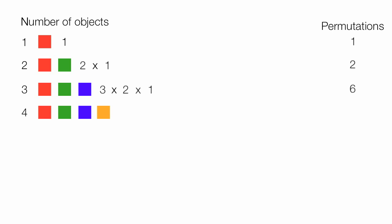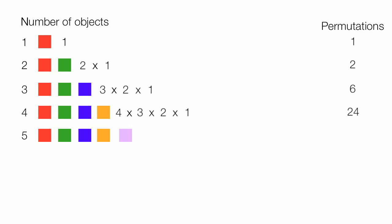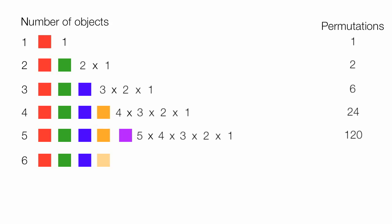With four objects, n equals four, so four times three times two times one equals 24 permutations. With five objects, n equals five: five times four times three times two times one equals 120. With six objects, it's six times five times four times three times two times one, which equals 720 permutations.